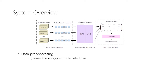The data preprocessing module extracts TLS 1.3 encrypted traffic and organizes it into flows. For each TLS message, we can directly extract two features without modification: message length and visible message type, storing these as a feature tuple. Therefore, we can represent TLS 1.3 encrypted flows as feature tuple sequences for subsequent processing.